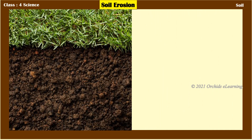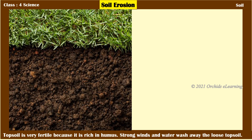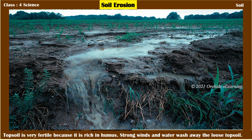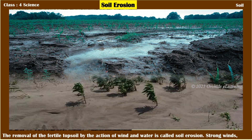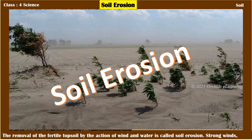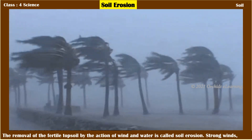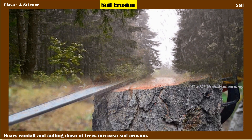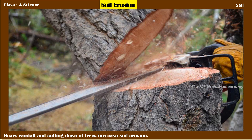Topsoil is very fertile because it is rich in humus. Strong winds and water wash away the loose topsoil. The removal of the fertile topsoil by the action of wind and water is called soil erosion. Strong winds, heavy rainfall, and cutting down of trees increase soil erosion.